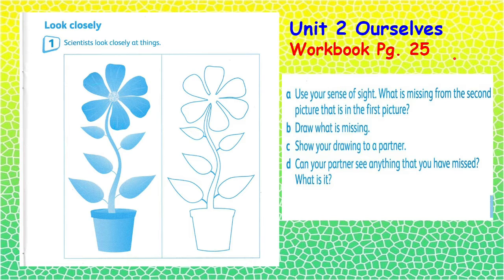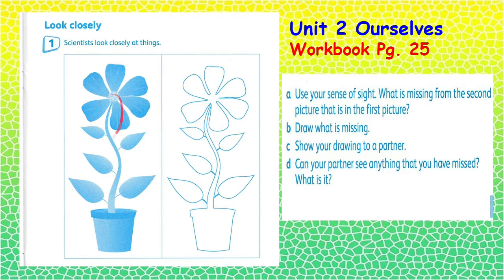Workbook page 25, look closely at these two pictures. Use your sense of sight. What is missing from the second picture that is in the first picture? Draw what is missing, then show your drawing to a partner. Then we will discuss if your partner can see anything that you have missed and what it is.